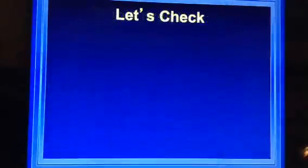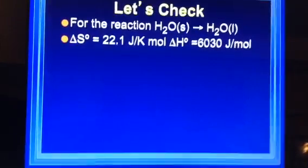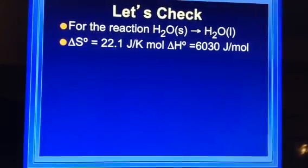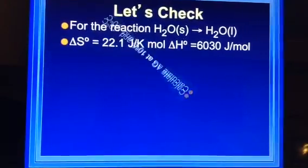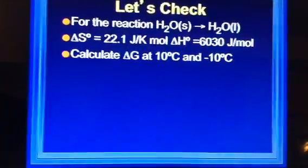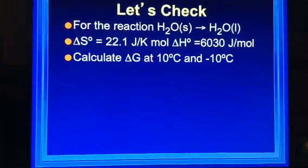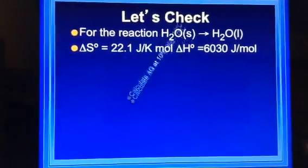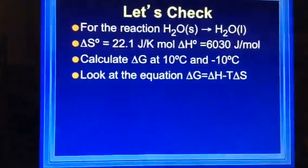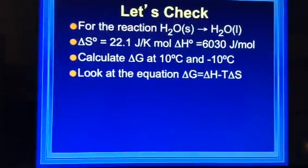Alright, so delta S equals 2.1 joules per kilo mole. Delta H is 6030 joules per mole. Calculate delta G at 10 degrees Celsius and negative 10 degrees Celsius. Alright, so we'll look at the equation. Delta G equals delta H minus T delta S.